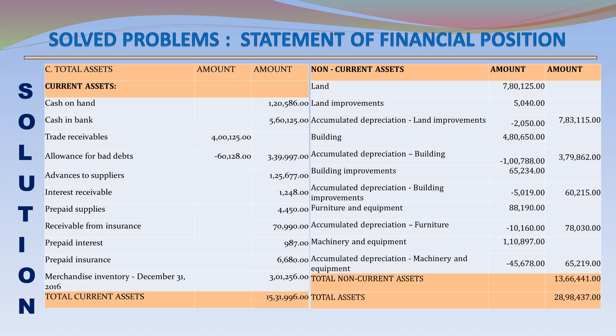Total Non-Current Assets – 1,366,441. Total Assets – 2,898,437.